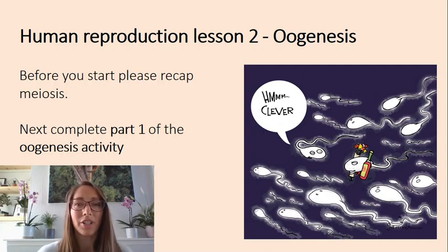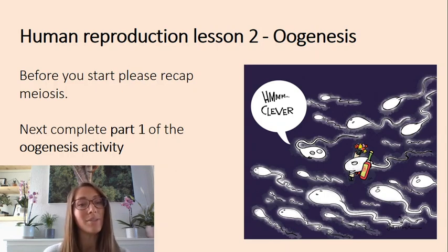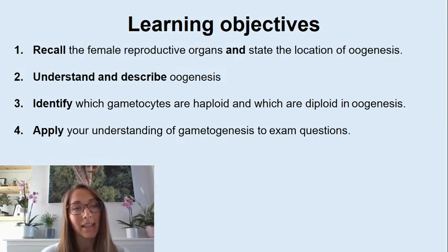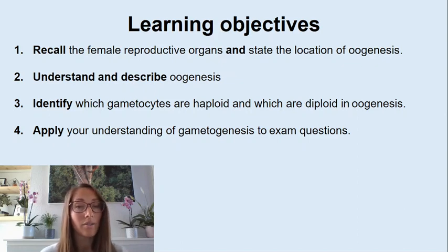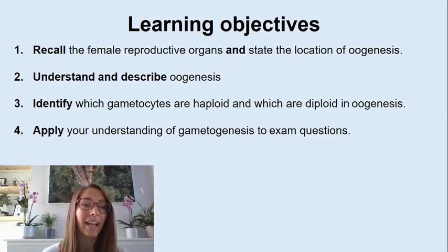Hello and welcome to Human Reproduction Lesson 2. This session is on oogenesis. Before you start, please make sure that you've recapped meiosis and also completed part one of the oogenesis activity. By the end of today's session, you should be able to recall the female reproductive organs and state the locations of oogenesis, understand and describe the process, identify which gametes are haploid and diploid at different stages, and apply your understanding to exam questions.